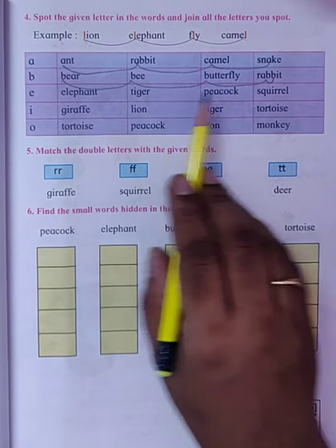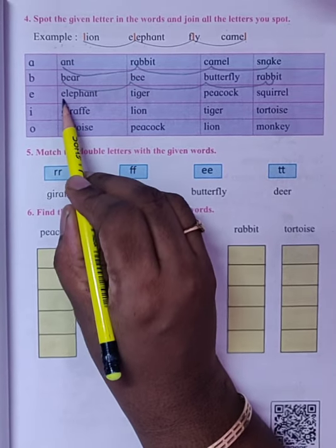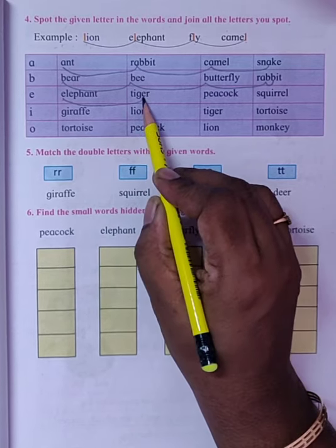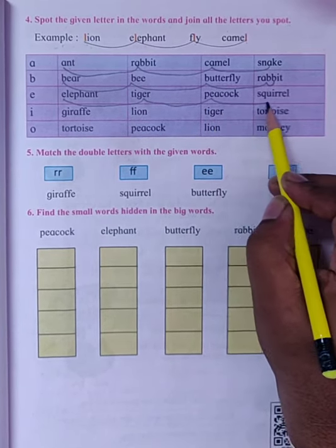Then Elephant, Tiger, Peacock, Squirrel. The first letter of Elephant is E. So we will join this E with the alphabet E in Tiger, the same E in Peacock, and E in Squirrel.